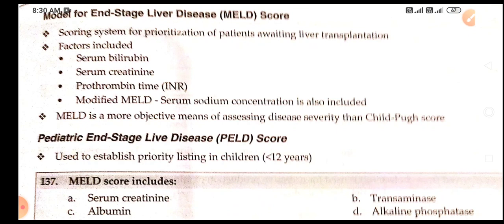Serum creatinine, albumin, transaminase, and alkaline phosphatase are not included in the MELD score. In UPSC CMS 2020, they asked which organ the MELD score is associated with — the answer is mainly liver diseases. I hope that's clear.